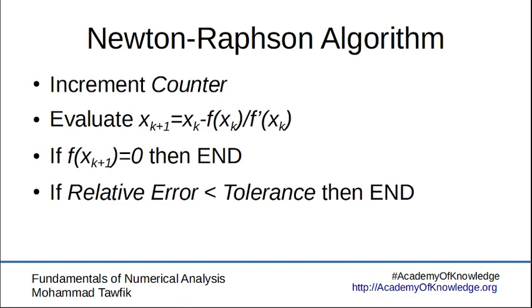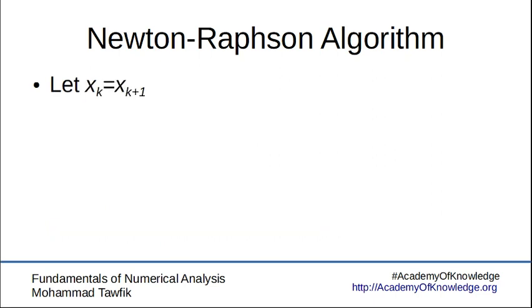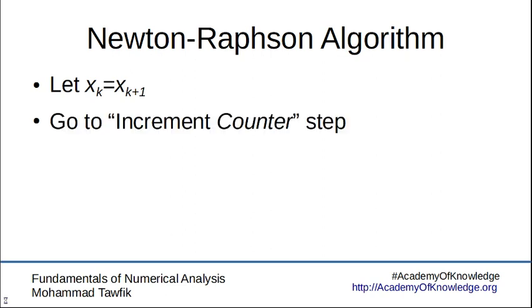Otherwise, we continue and check for the maximum number of iterations. If we have reached the maximum number of iterations, then we end and we couldn't find the solution in that case. Otherwise, we also continue. Then we put the new value in the old one because now we are ready to go back and iterate again.